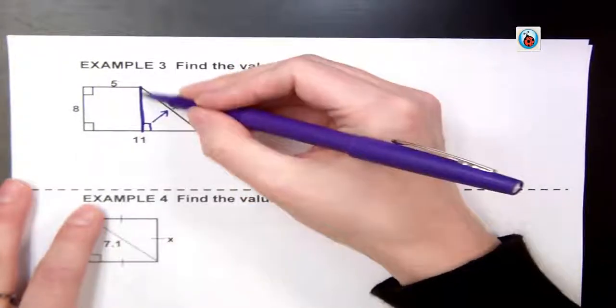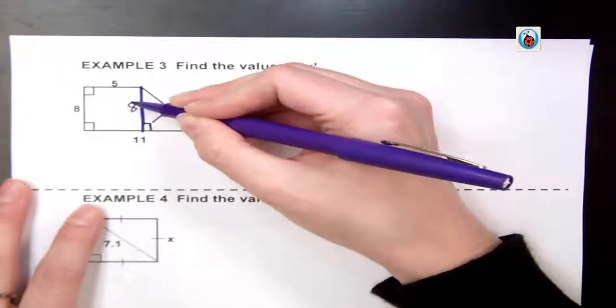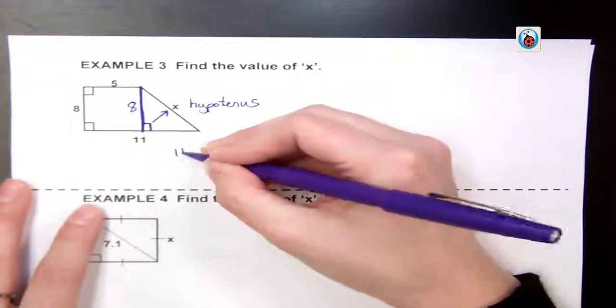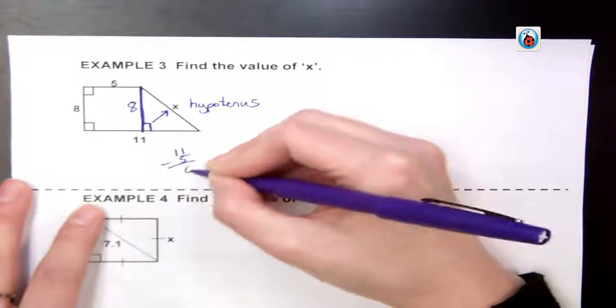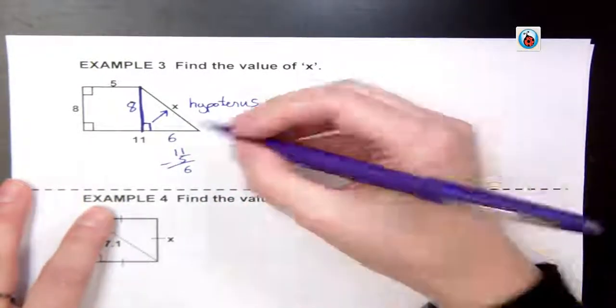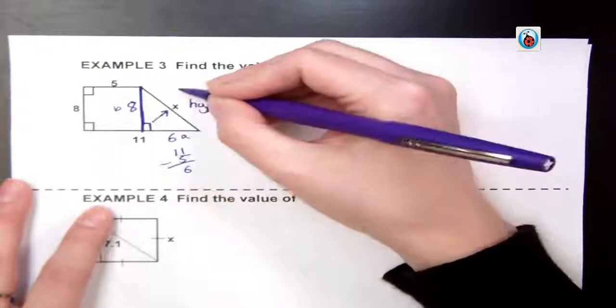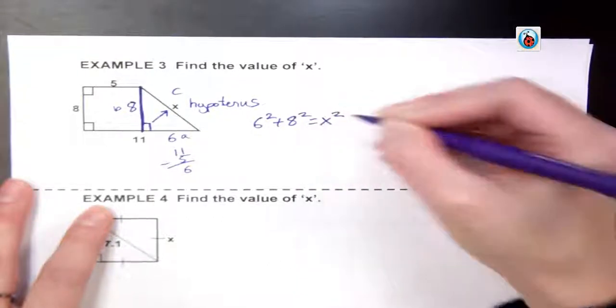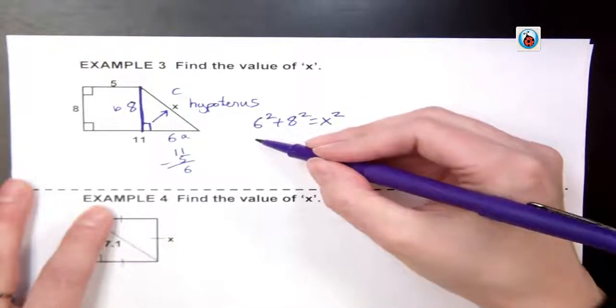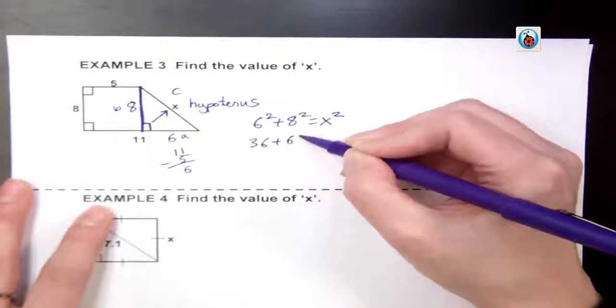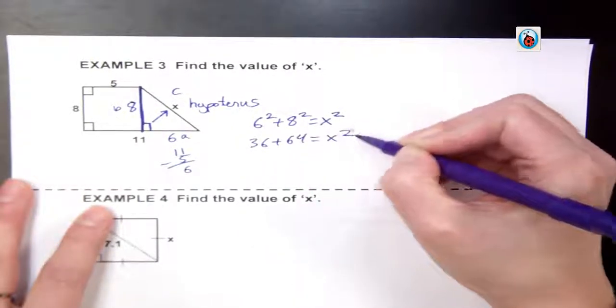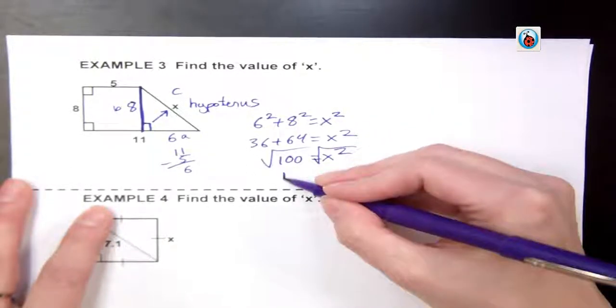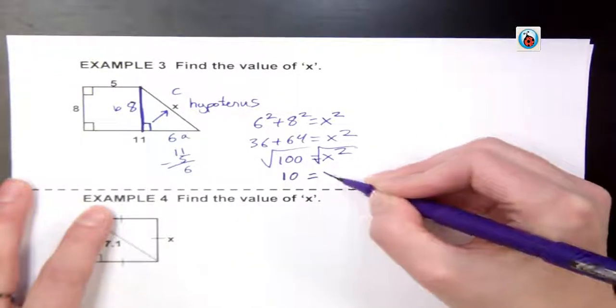Okay, if this is 8, then this line I drew also has to be 8. To find if this whole thing is 11 and the top is 5, I just subtract 11 minus 5 to give me the 6. So now I have my a, b, and c. I have 6 squared plus 8 squared equals x squared. I do the math: 36 plus 64 equals x squared. 100 equals x squared. I take the square root of each to give me x equals 10.